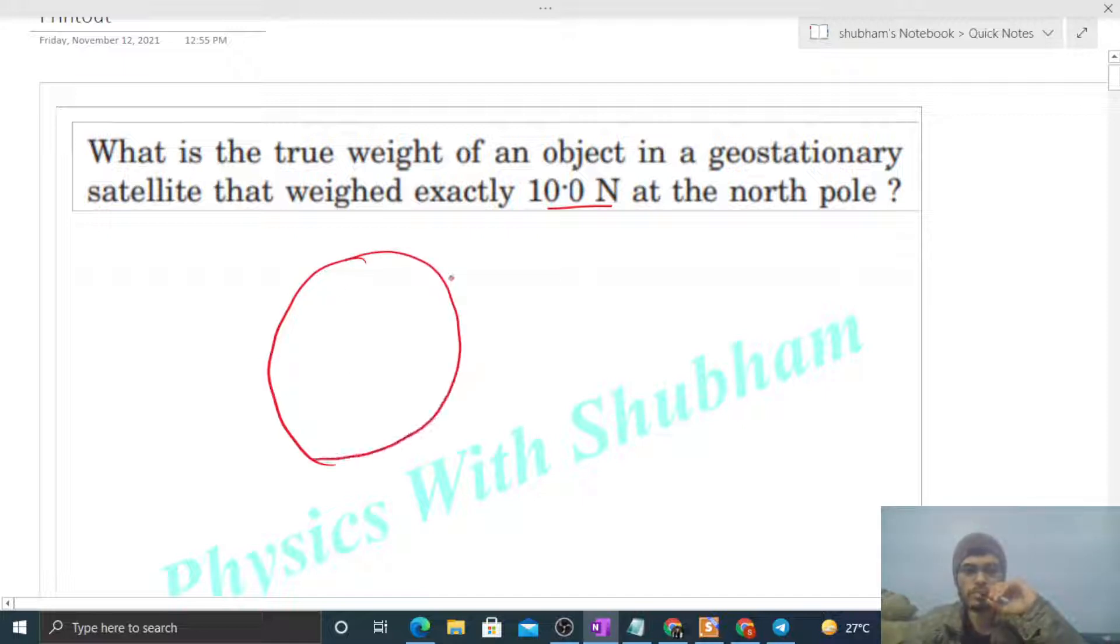So let's say we have Earth with mass capital M and radius capital R. This is the axis of rotation of the Earth, this is north pole, this is south pole, and this is the equatorial plane.